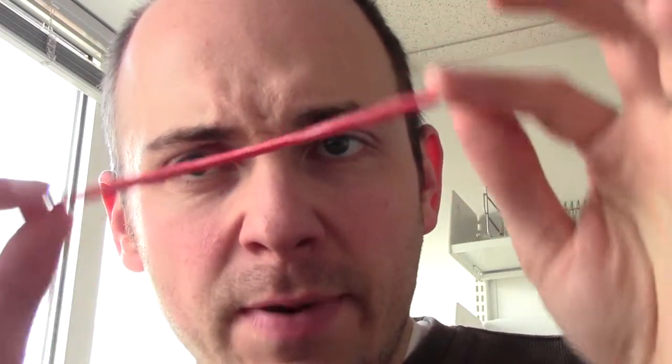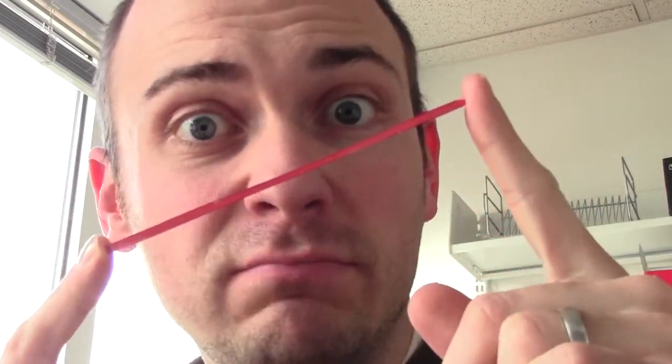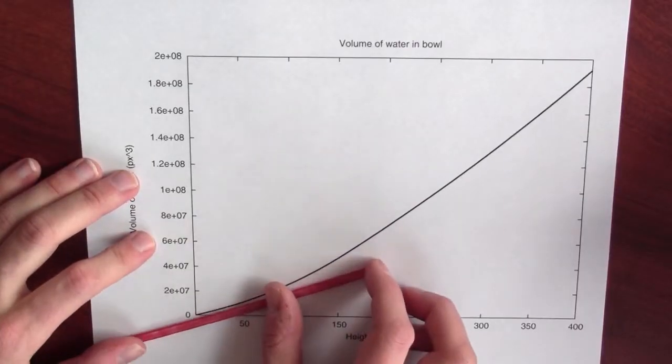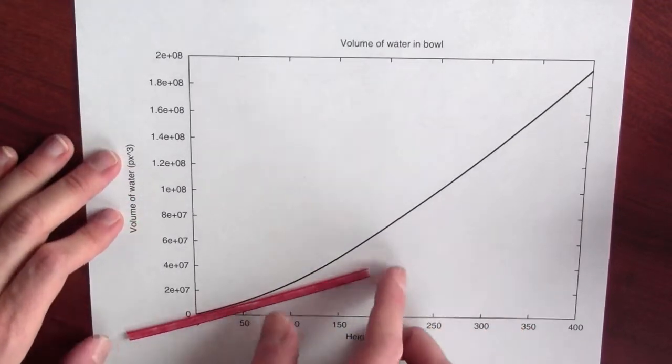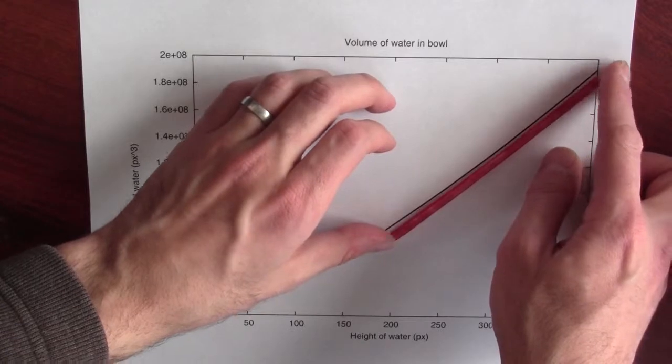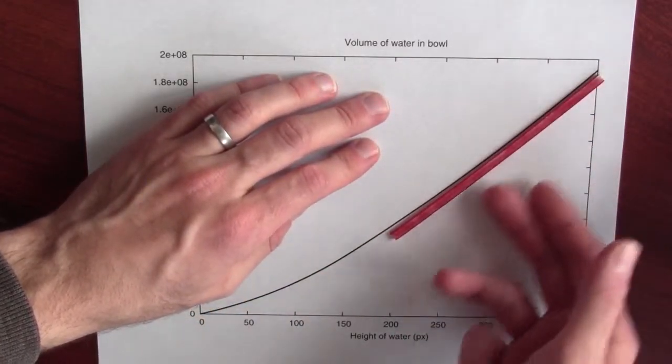Now let's think a little bit about the slope of the tangent line to this graph. So the tangent line initially has a not very large slope, compared to after a while, the tangent line has a much higher slope.